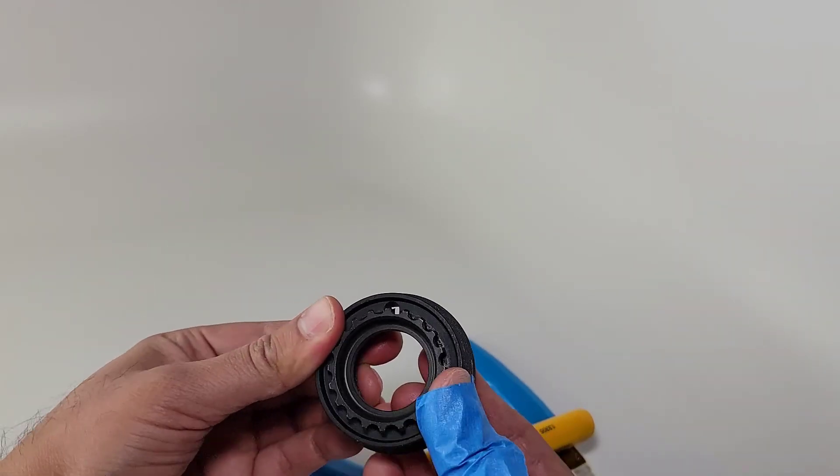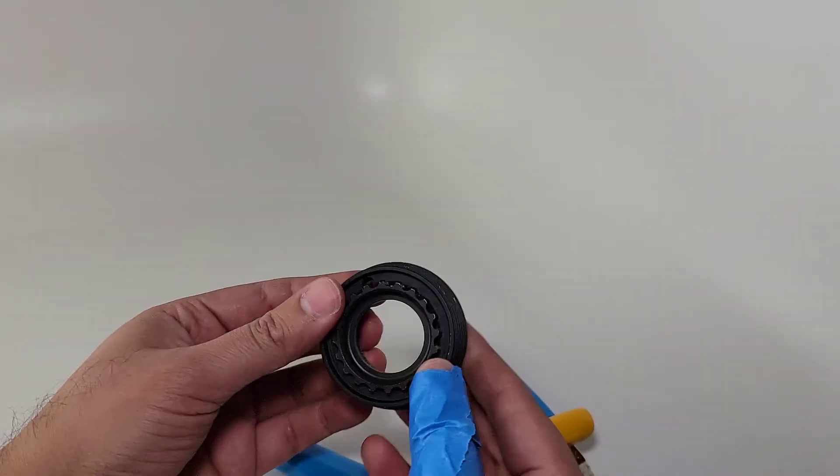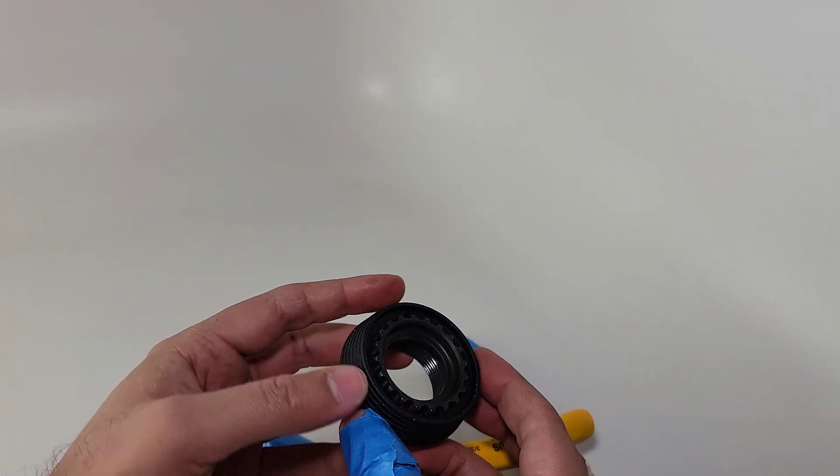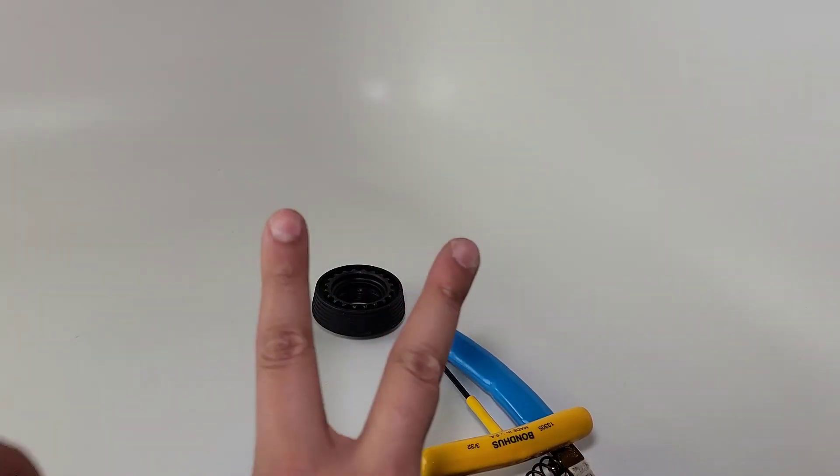So we aligned everything. The delta ring works as it should. This is ready to be installed in an AR-15. Thank you guys for watching. Peace.